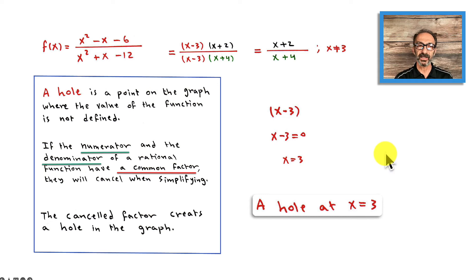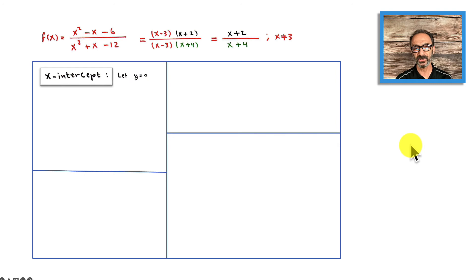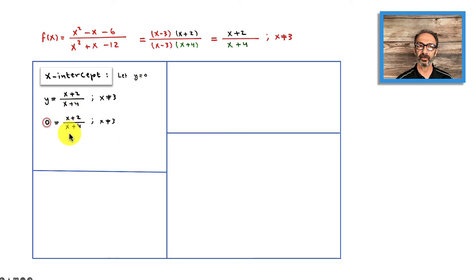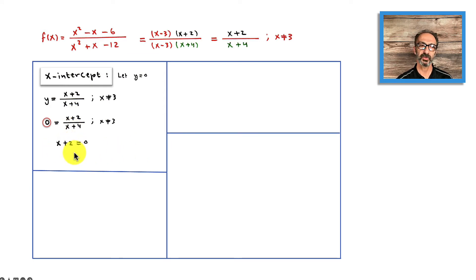Now let's talk about the x-intercept. To find the x-intercept we let y equal 0. Using the simplified rational function — knowing there is a hole at x equals 3 — if the rational equals 0, that means the zero comes from the numerator, since 0 over something is 0. So x plus 2 has to equal 0, which means x equals negative 2. The graph is going to cross the x-axis at x equals negative 2.